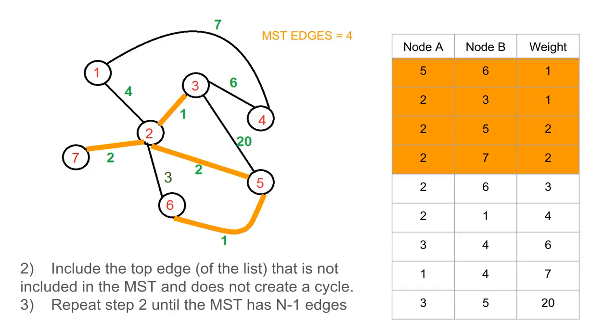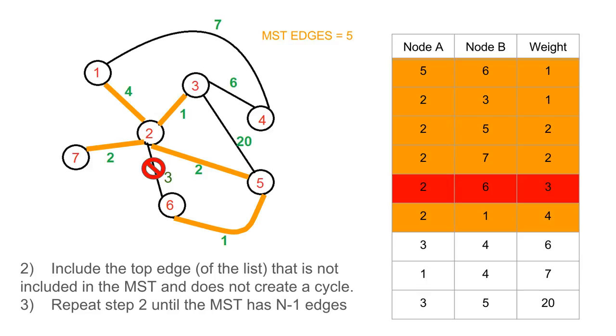We're gonna reach the edge two to six with weight three, and now we're gonna have a problem. The problem is that we are gonna create a cycle if we include this edge. It's clear for you to see, so we're gonna mark it, we're never gonna use this one. And we're going to the next one, which is two to one with weight four, which is okay.